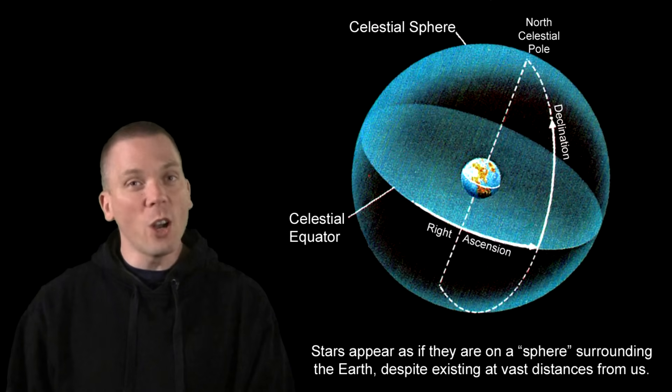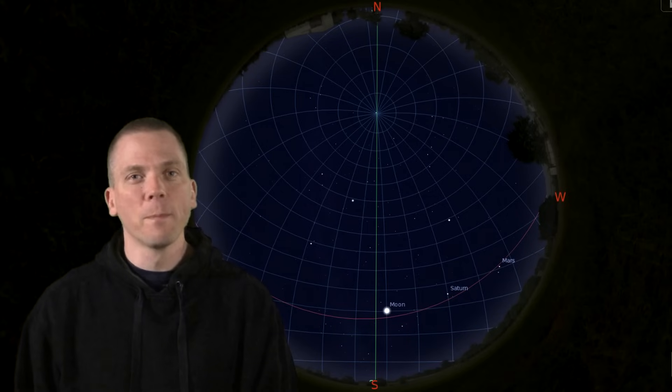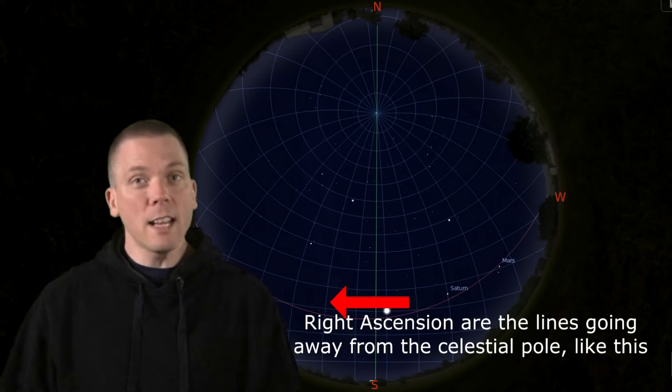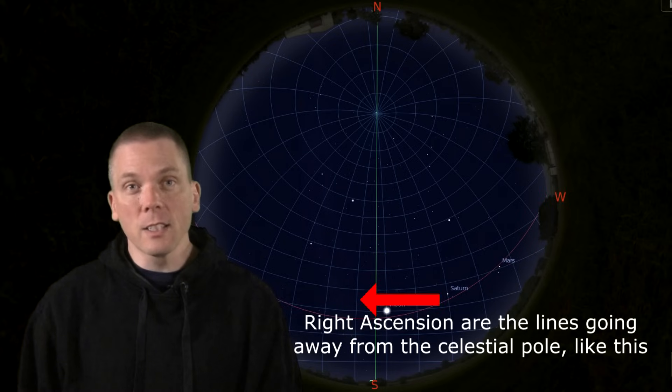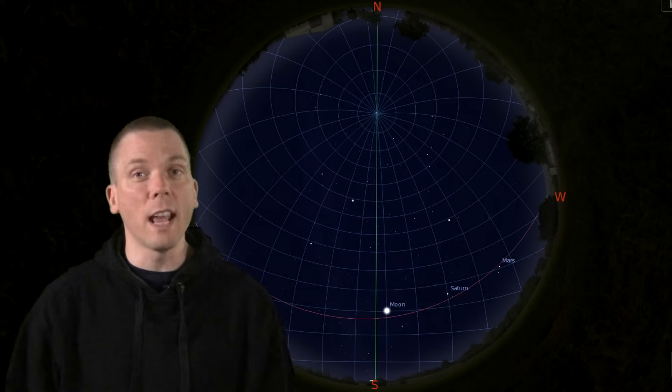These are like the longitude lines on Earth that start at one pole and run to the other pole in equal spacings. In Right Ascension, they're listed in hours and minutes, and the zero hour for Right Ascension begins in Aries the Ram, which is a zodiac constellation.